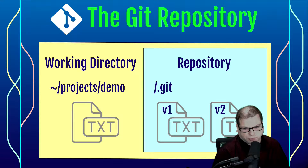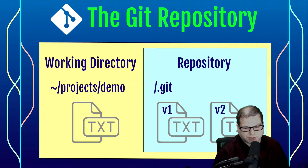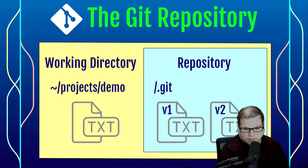There's a special .git folder at the root of your working directory that actually contains the repository. That includes all history that's associated with your repository, which would include all different versions of the files as you check them in.